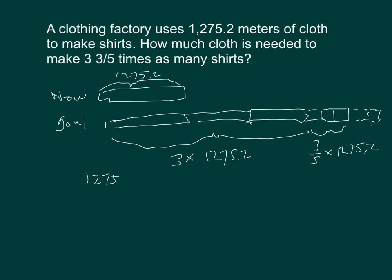Let's start with the first part. Working through the multiplication: 3 times 1,275.2. Three times 2 is 6, 3 times 5 is 15, 3 times 7 is 21 plus 1 is 22, 3 times 2 is 6 plus 2 is 8, and 3 times 1 is 3. So 3 times 1,275.2 equals 3,825.6.